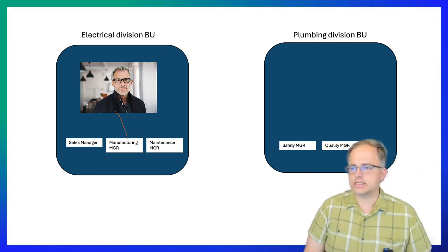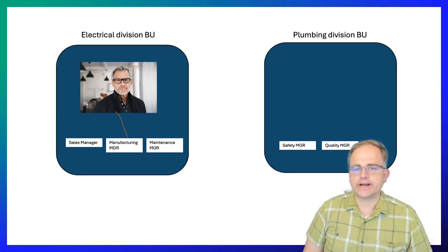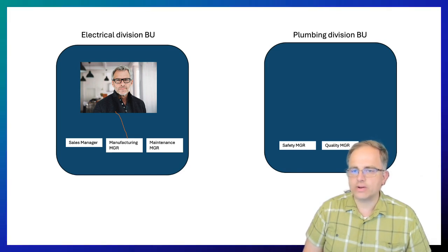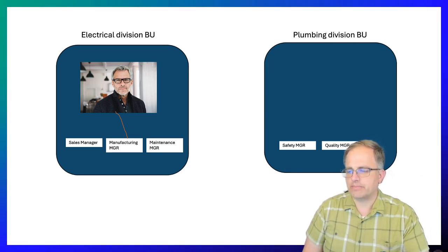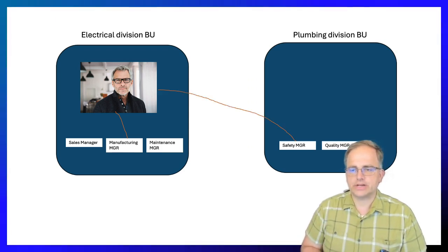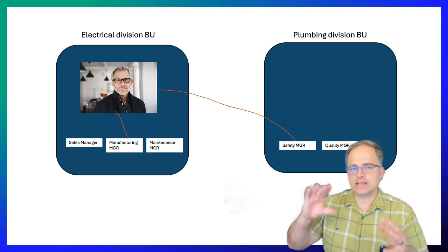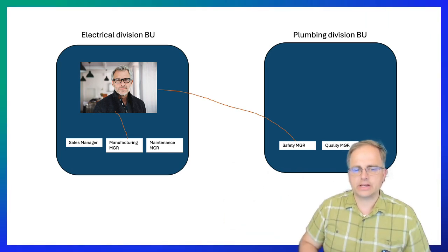Traditionally, it was very difficult to handle that kind of scenario. You essentially would have to use sharing access teams and other workarounds, which are still an option but are a hassle to manage manually. Now I can give Frank the manufacturing manager role from business unit one and the safety manager role from business unit two — give him both roles — and he will get the permissions that both those roles provide in each respective business unit.